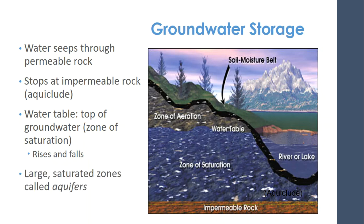Large saturated zones are called aquifers. We have several really big ones in the United States — there are also smaller ones — but these are called aquifers. If this were part of a large zone of saturation, it would be an aquifer.